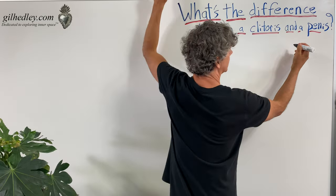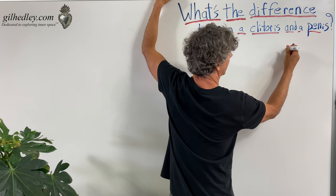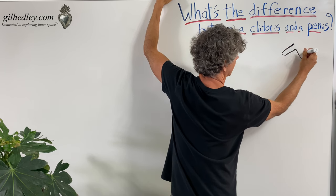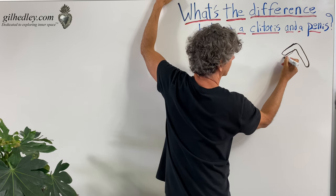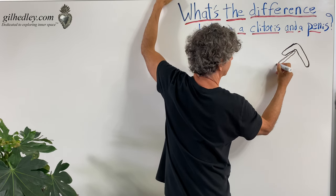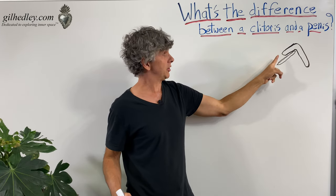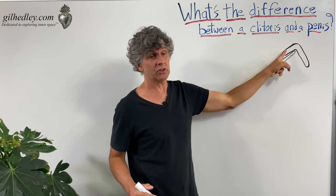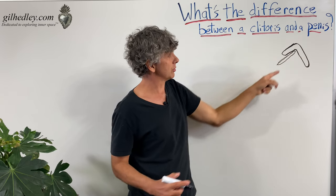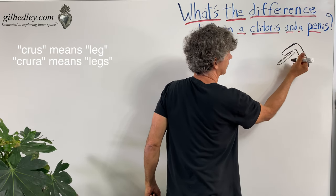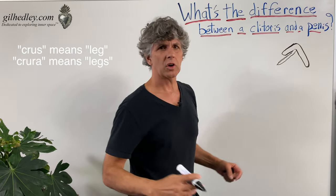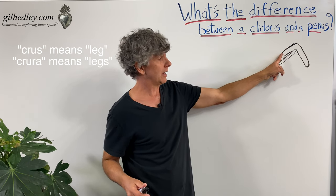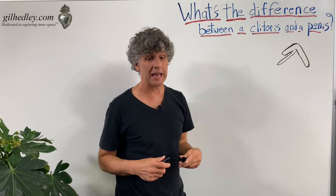Let's start with the clitoris. The clitoris has a shaft — some of you might not even know that — and it has two legs. The glans is the end point of the clitoris. The shaft is the length of its body. And the crura, or crus, connects into there. Crura means legs, crus means leg. So it has legs, a shaft, and an end point called the glans.